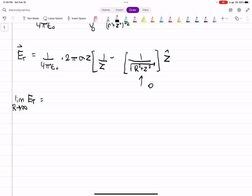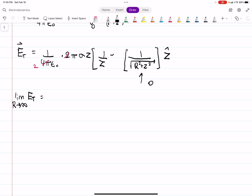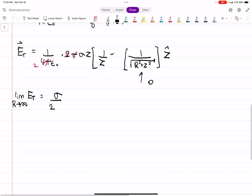And when we do that, and we cancel some terms, there's a 2 there, you'll get sigma, pi cancels as well, sigma divided by now 2 epsilon, and the z-hat direction.